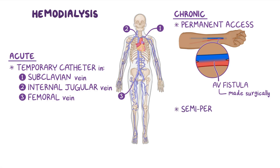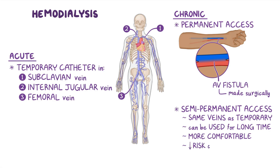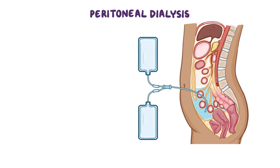Another semi-permanent access is a so-called permanent catheter that can be located in the same veins as the temporary catheter, but it can be used for a long time, is more comfortable for the client, and there's a lower risk for infection than with the temporary access. Finally, peritoneal access can be obtained by inserting a silicone rubber catheter in the peritoneal cavity.